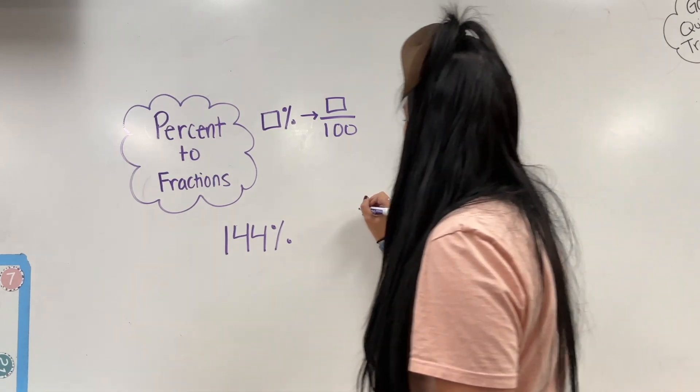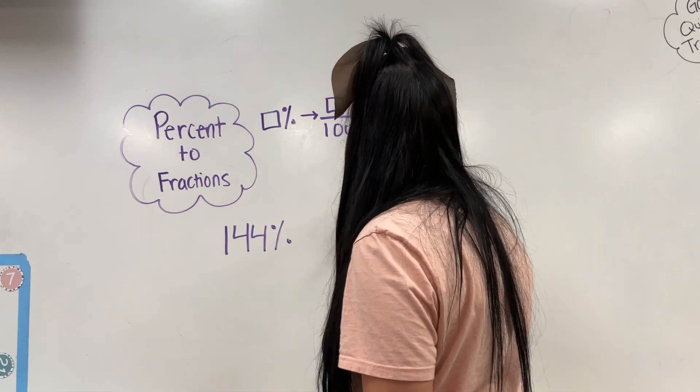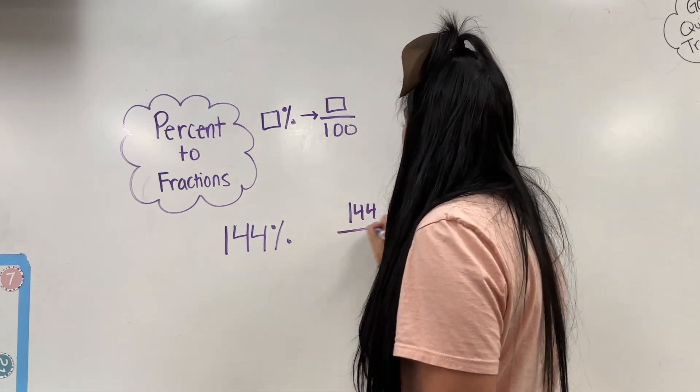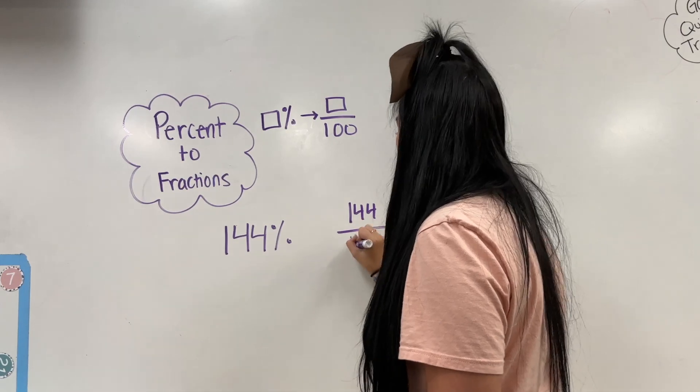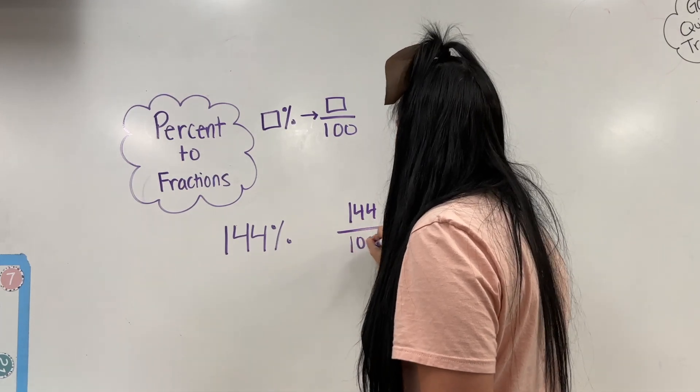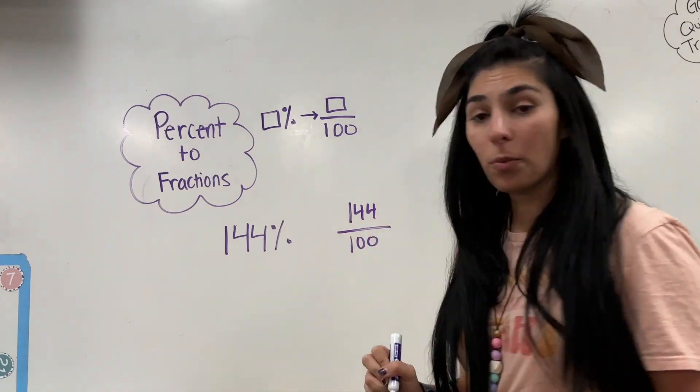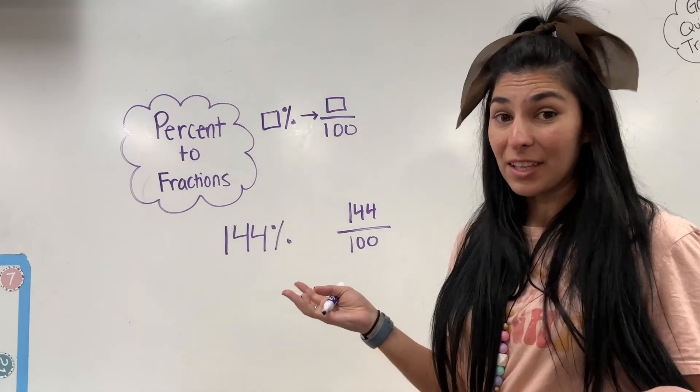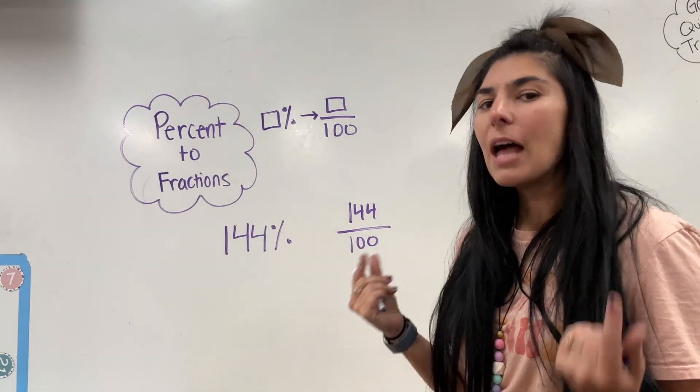Let's do another one. I have 144% — that's going to be my numerator, 144. Again, it's a percent so it's going to be over 100. That's your fraction: 144/100.